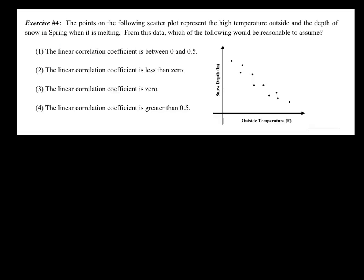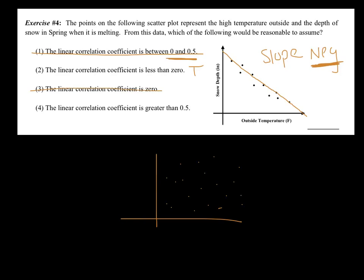Exercise four. The points on the following scatterplot represent high temperatures outside and the depth of the snow in spring when it's melting. From the data, which of the following would be reasonable to assume? Alright, so the best thing to do, again, is draw that line in, if possible. Is it possible for you to draw in a line of best fit, or are they too scattered? Well, I would say I could definitely see that these points are kind of on the downward edge. Alright, so what's popping through my head is I'm saying that this slope is negative. And now I'm going to read my choices and see if anything describes that. The linear correlation is between zero and 0.5. Well, does that give me a negative number if I'm between zero and 0.5? I don't think so. The correlation is less than zero. If you're less than zero, are you a negative number? I would say that's true. Let me keep reading. The linear correlation is zero. Well, remember, zero means you had no idea where to draw it. It's just scattered all over the place. So that's not true. And the linear correlation is greater than 0.5. Well, that's a positive number, and we just said we had a negative. So I think option two makes the most sense.